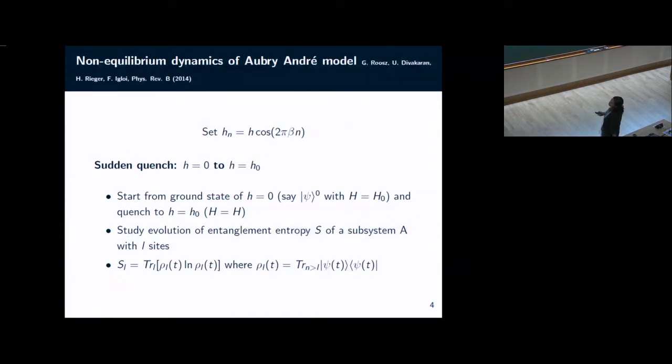The quantity that we are going to study is the evolution of entanglement entropy to monitor the transition from localized to delocalized phase. You calculate the entanglement entropy of a subsystem A which consists of a small set of L sites out of the total capital L sites. As usual, we trace out all the sites which are not there in subsystem A and study what happens to the entanglement entropy as a function of time.